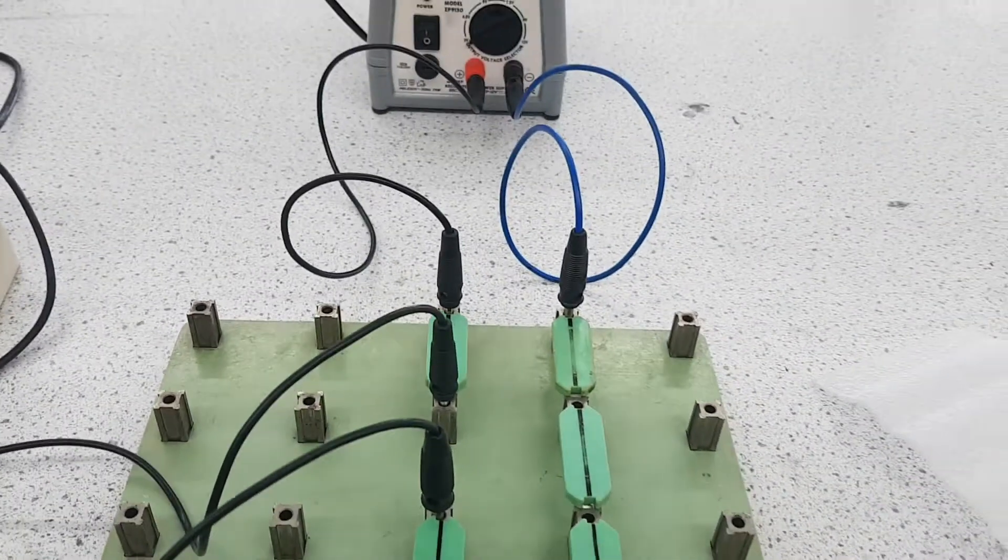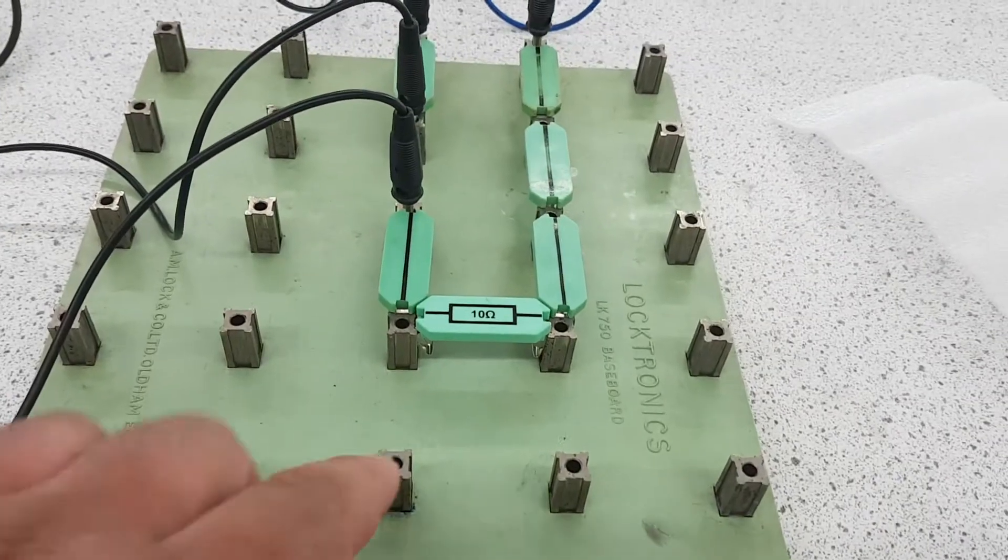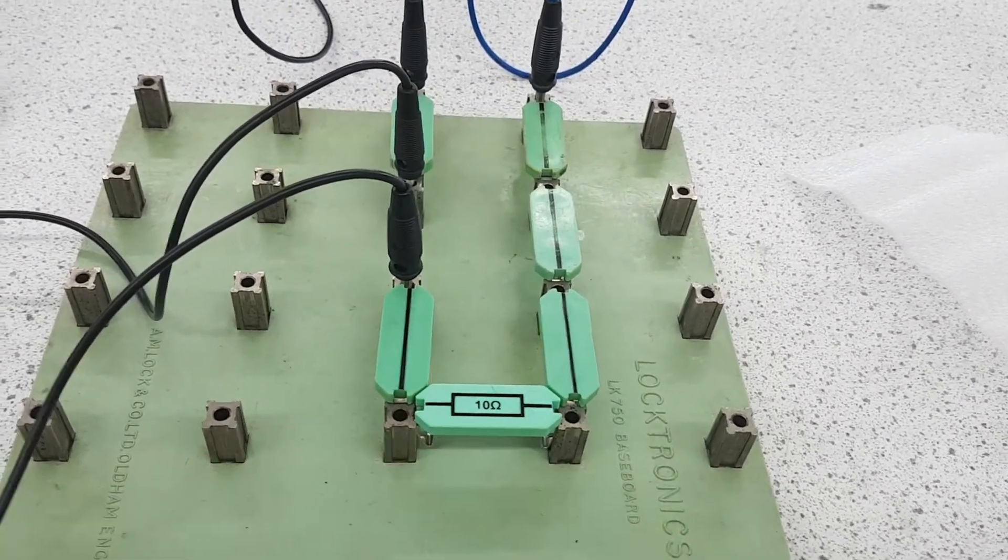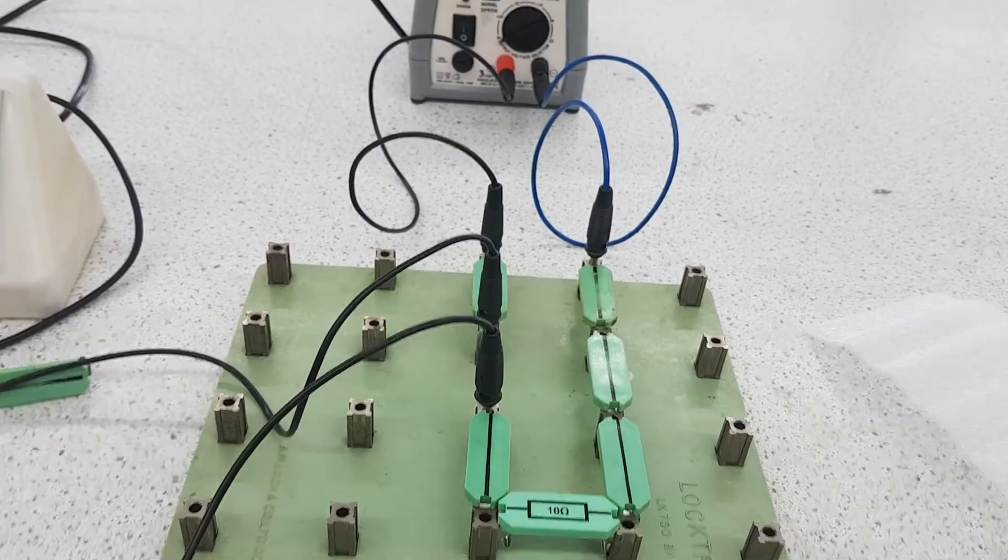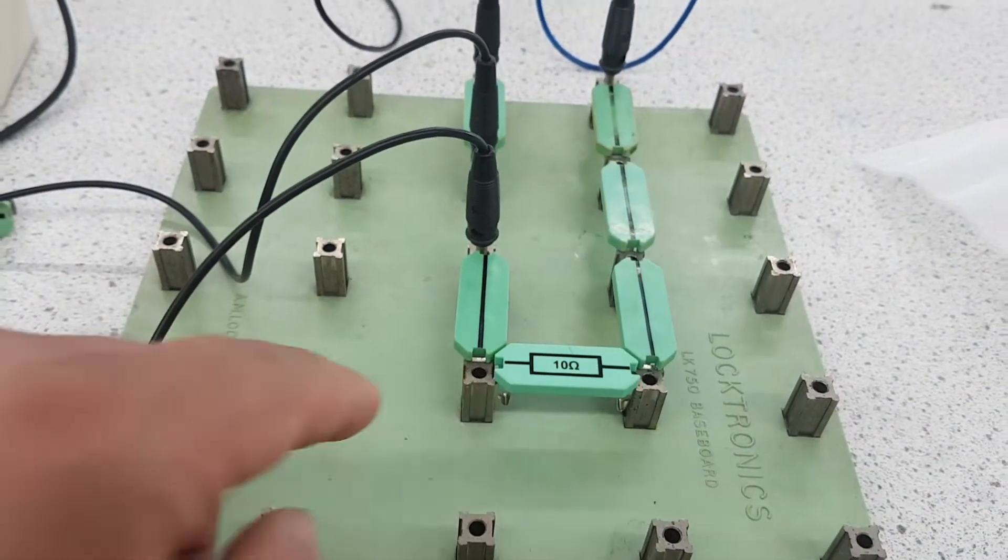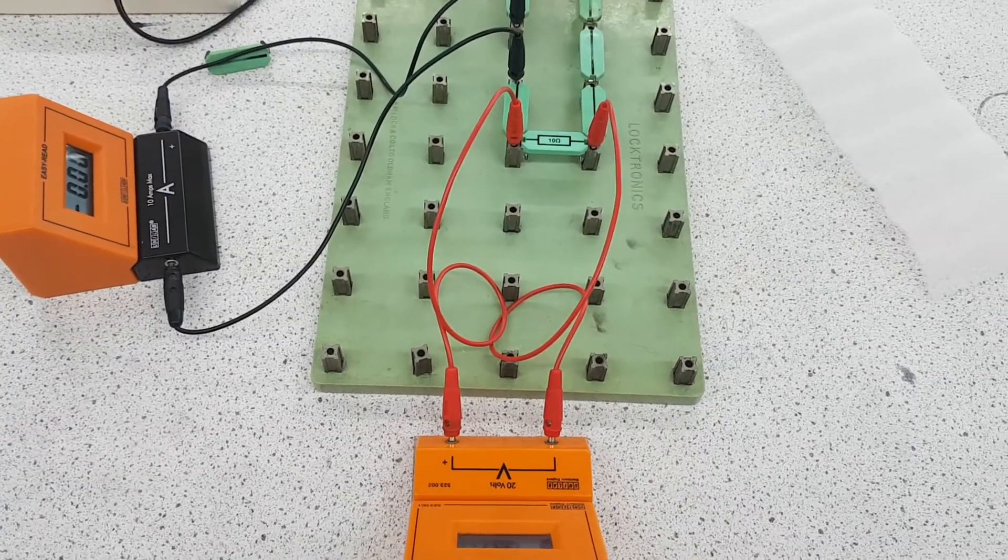Right, now at the bottom we need to measure the potential difference or voltage across this resistor. So I'm going to place a voltmeter in parallel to this fixed resistor.